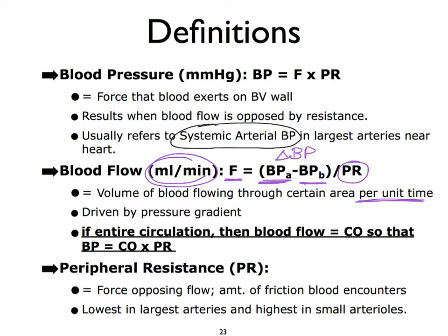Peripheral resistance is anything and everything that makes it harder for blood to flow smoothly in the vessels. The major reason peripheral resistance increases is vasoconstriction, though many other factors also play a role. Peripheral resistance is typically lowest in our largest arteries because they have such a large lumen, and highest in smaller-lumen vessels that depend on their tunica media smooth muscle for vasoconstriction and vasodilation.